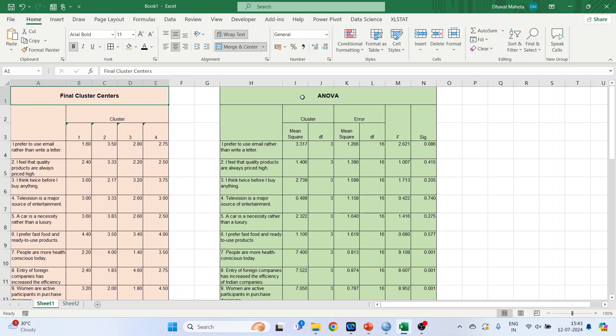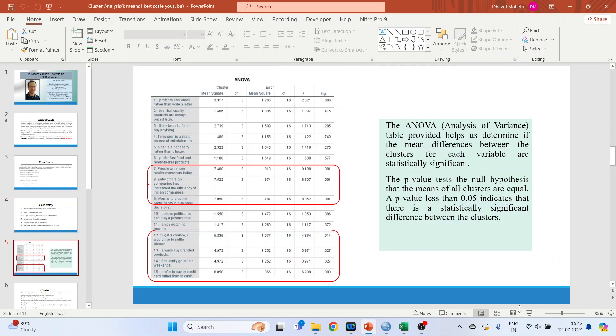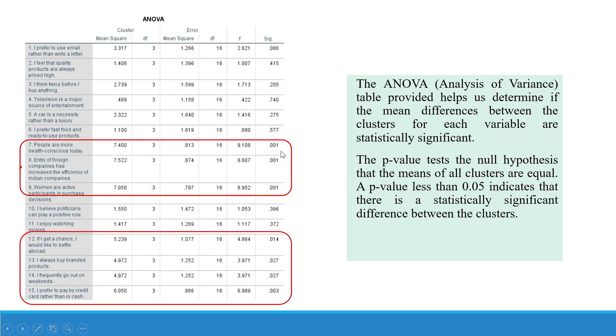So now we have cleaned both the tables. This is a final cluster centers and this is a ANOVA table. In ANOVA table we will have to focus on the significant value. Let's try to understand this also. Those statements whose p-value is less than 0.05. They are the statements which are significant in creating the clusters.